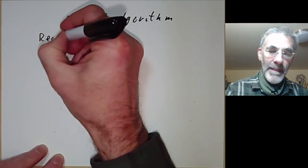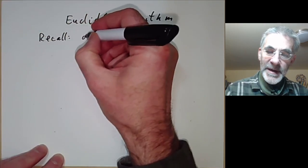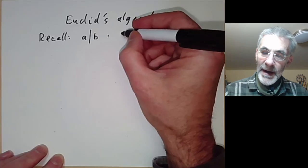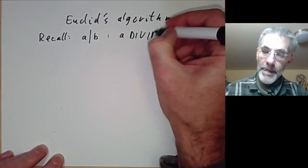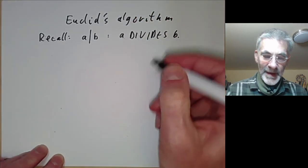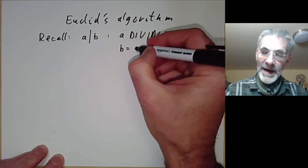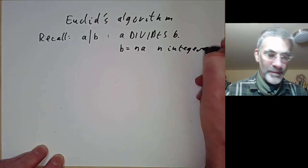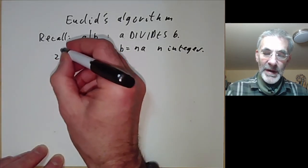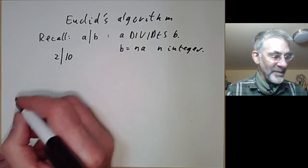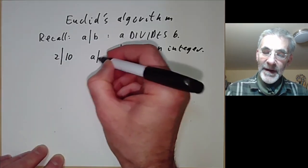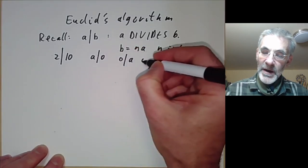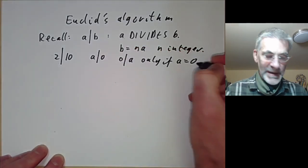We recall that the notation a with a long vertical line b means a divides b — in other words, b is equal to na for n an integer. For example, 2 divides 10; a divides 0 for any a; and 0 divides a only if a is equal to 0.